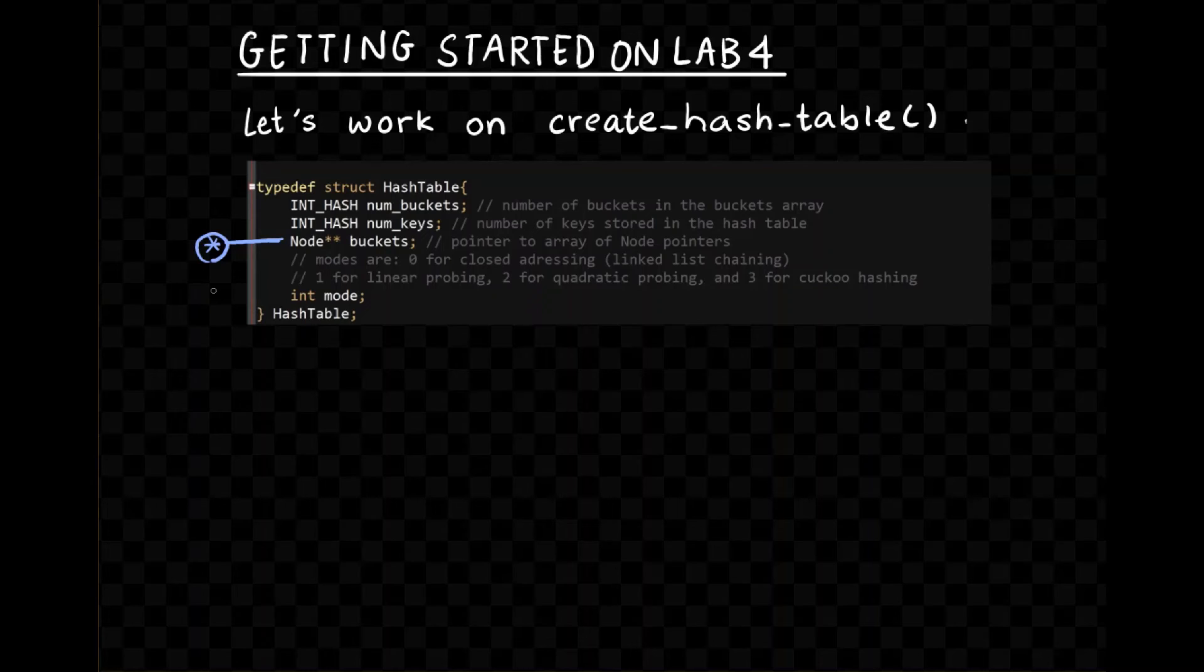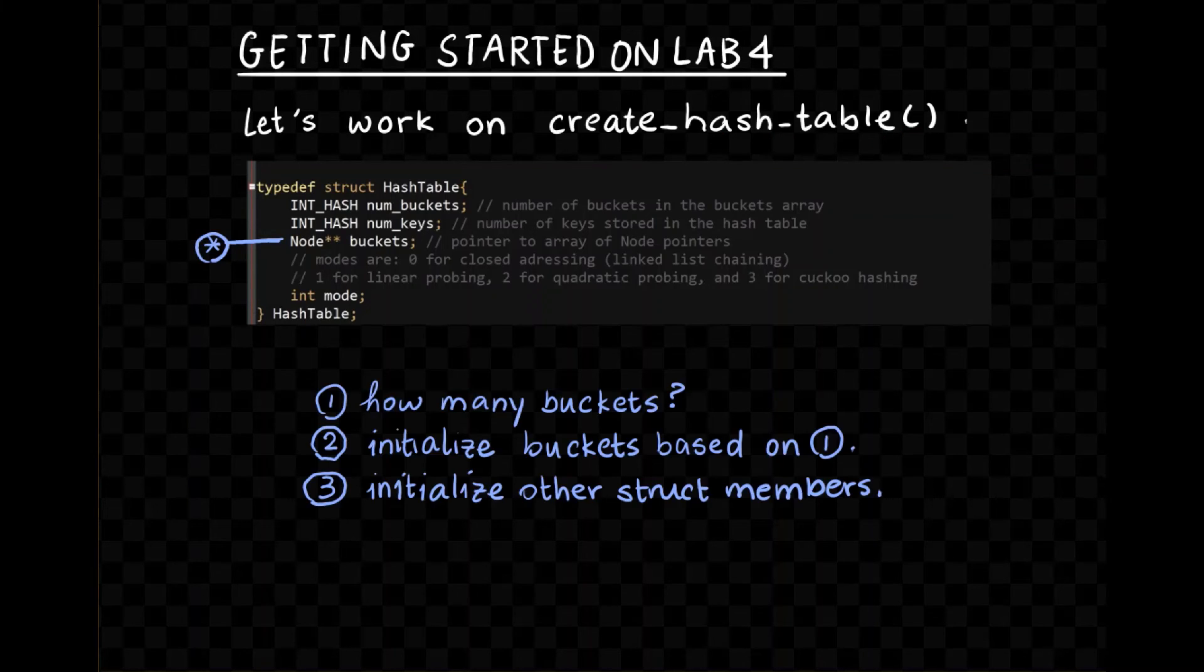Okay, so what are the things that we want to do in this createHashtable function? Well, I had a few questions that I wanted you to answer, so take a minute, pause the video, and answer these questions. The first is, how many buckets are you going to initialize based on the inputs to createHashtable? And then the second step is you have to initialize buckets based on step one. So how will you initialize those buckets? And then the third question, and this one is the most trivial, is how would you initialize the other struct members? So pause the video, and then we'll come back and take it up.